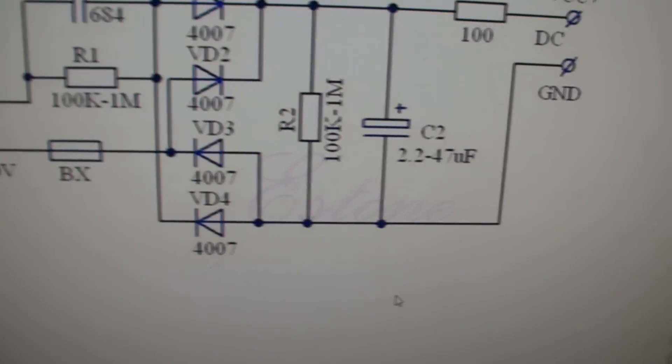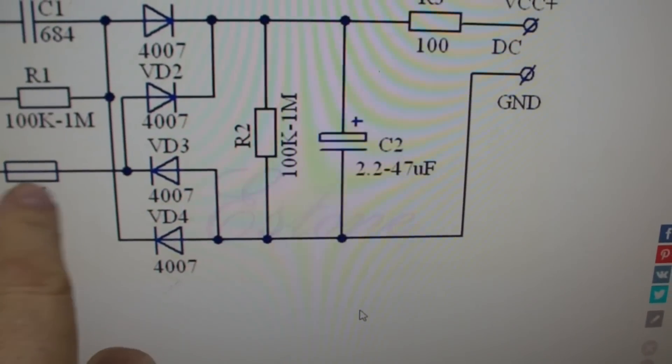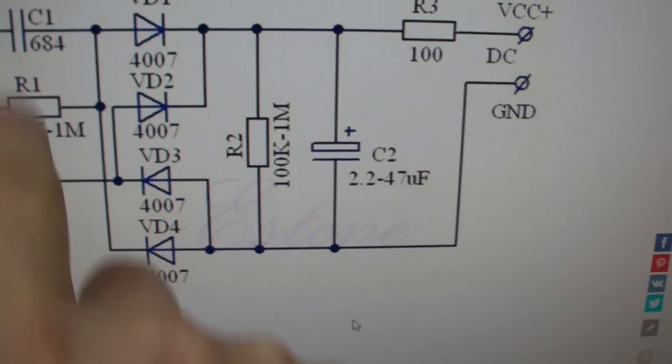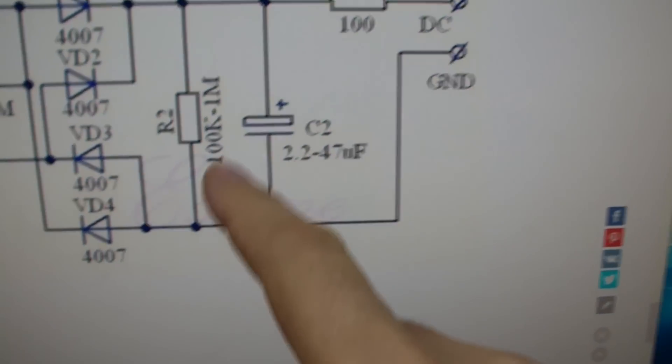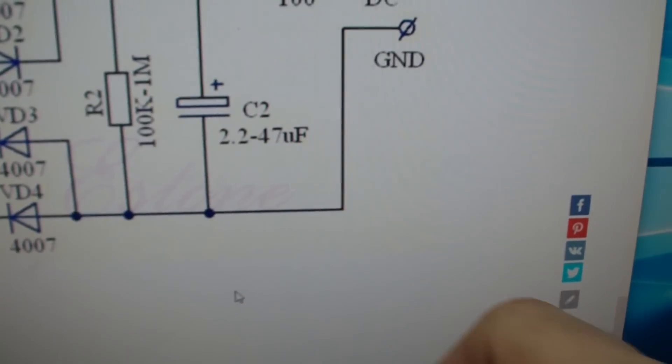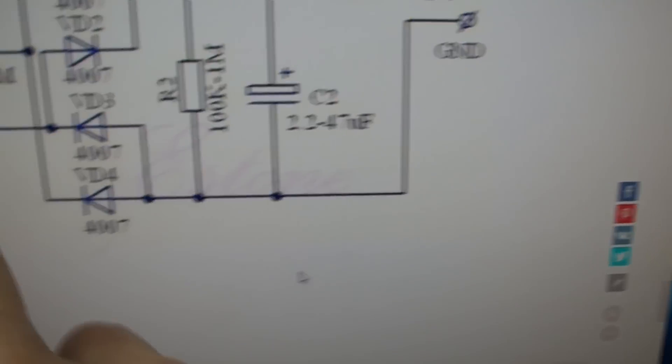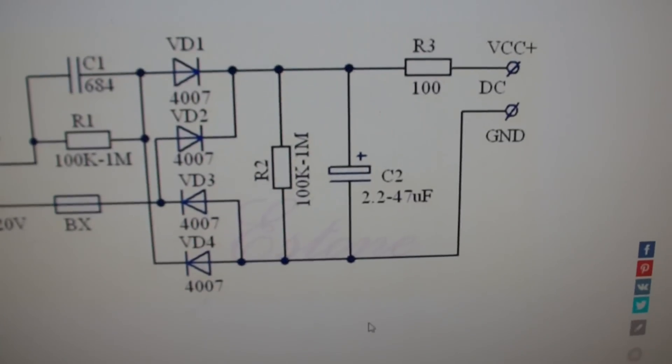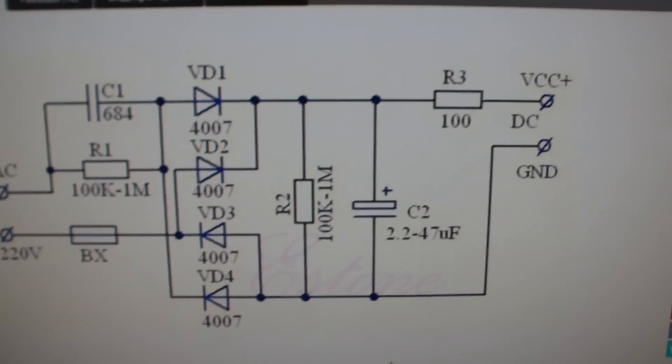It appears to have a BX. I don't know what that would be. We've got a resistor, a capacitor, four diodes, another resistor, another capacitor, and another resistor. And the BX, we'll look for that. Maybe it's a ferrite bead or something like that.